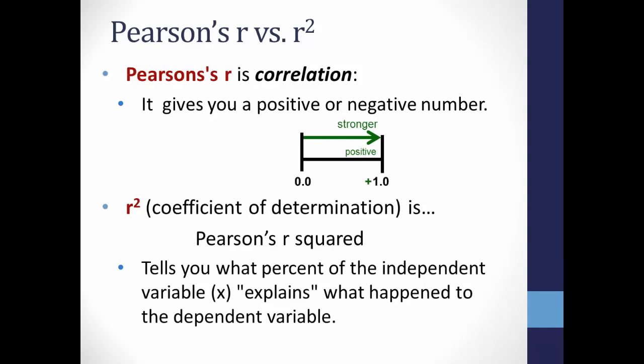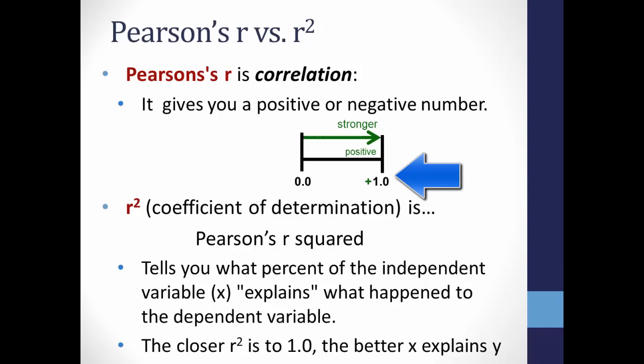The closer R-squared is to 1, the better the prediction — in other words, the better x explains what happens to y. R-squared, then, is used for regression analysis.